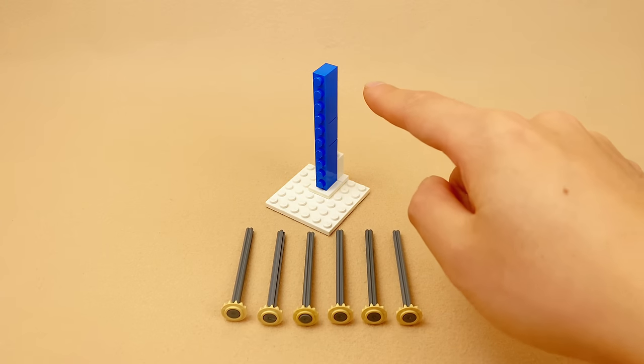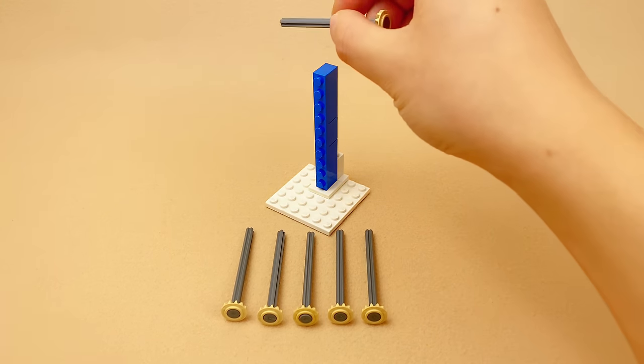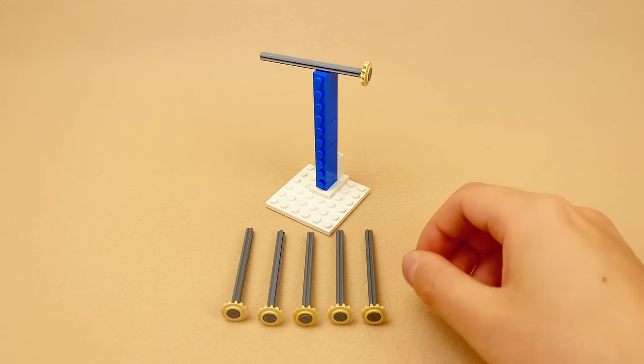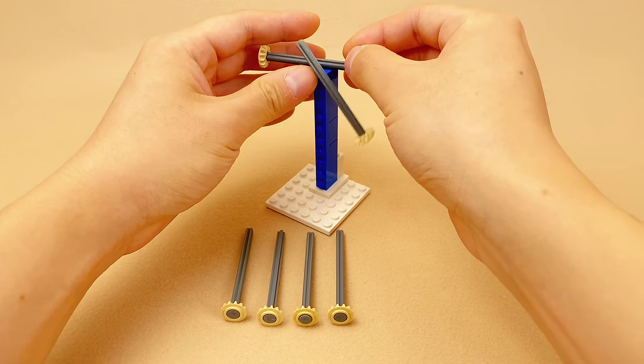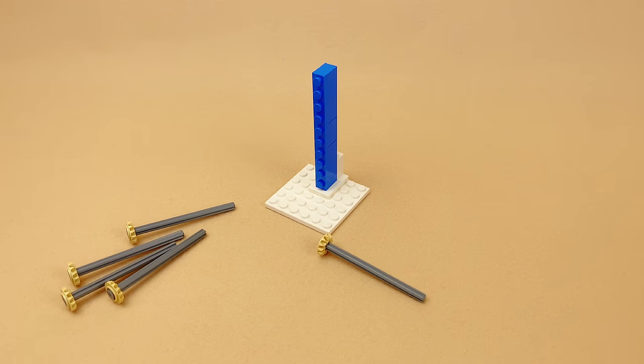This puzzle is called six nails. The object is to put all six nails on the top of this blue brick. But it is impossible to balance six nails within such a small space.